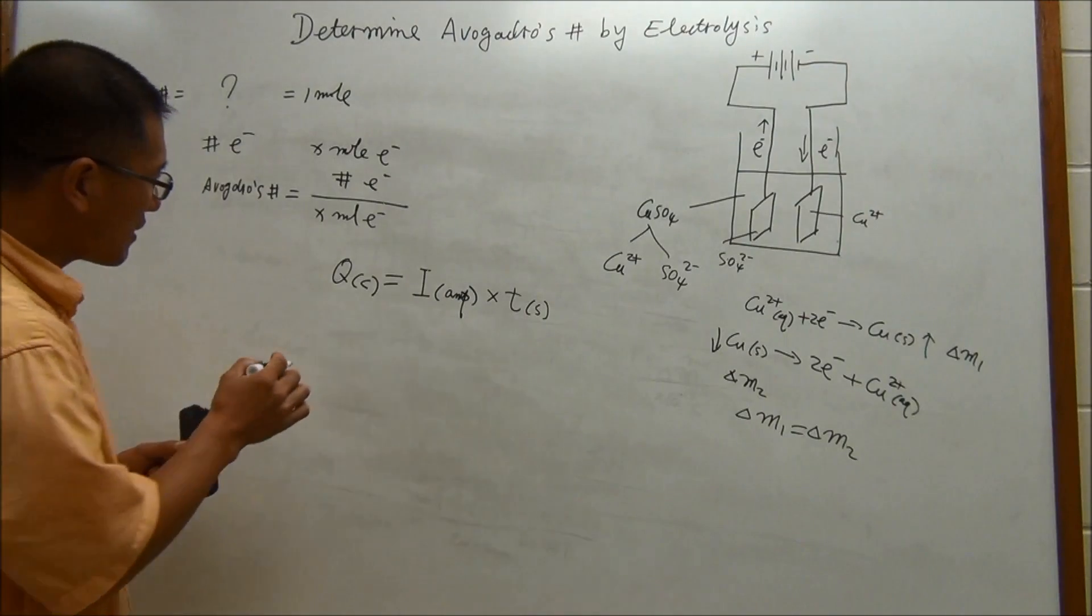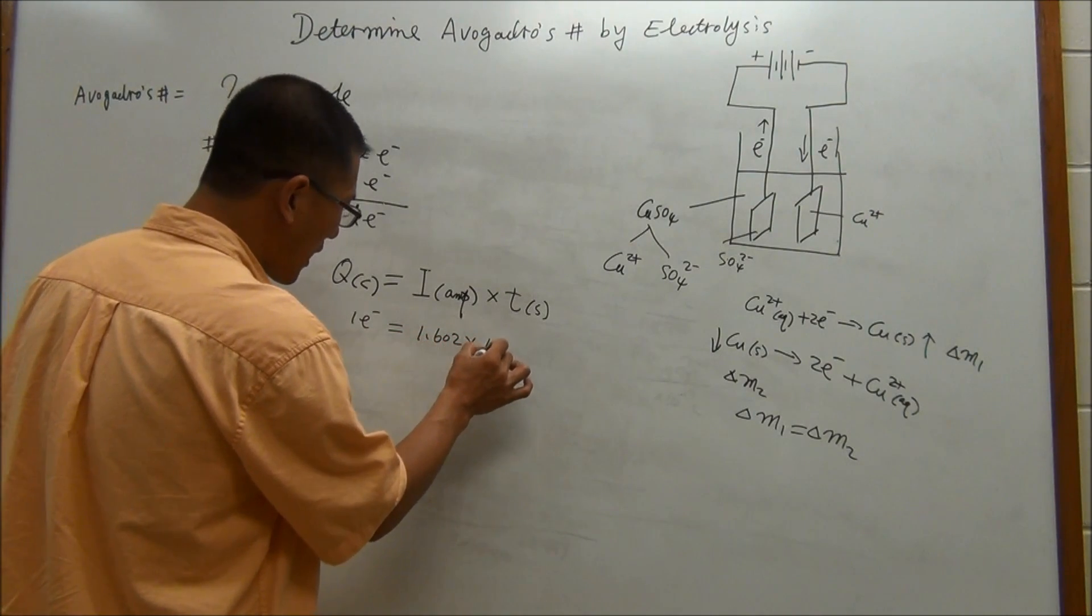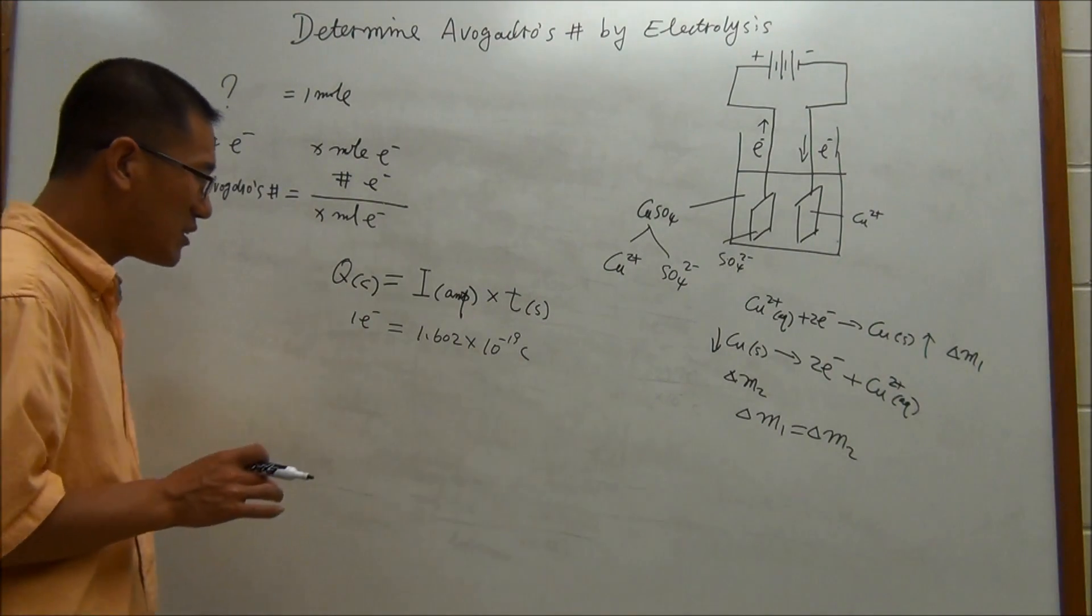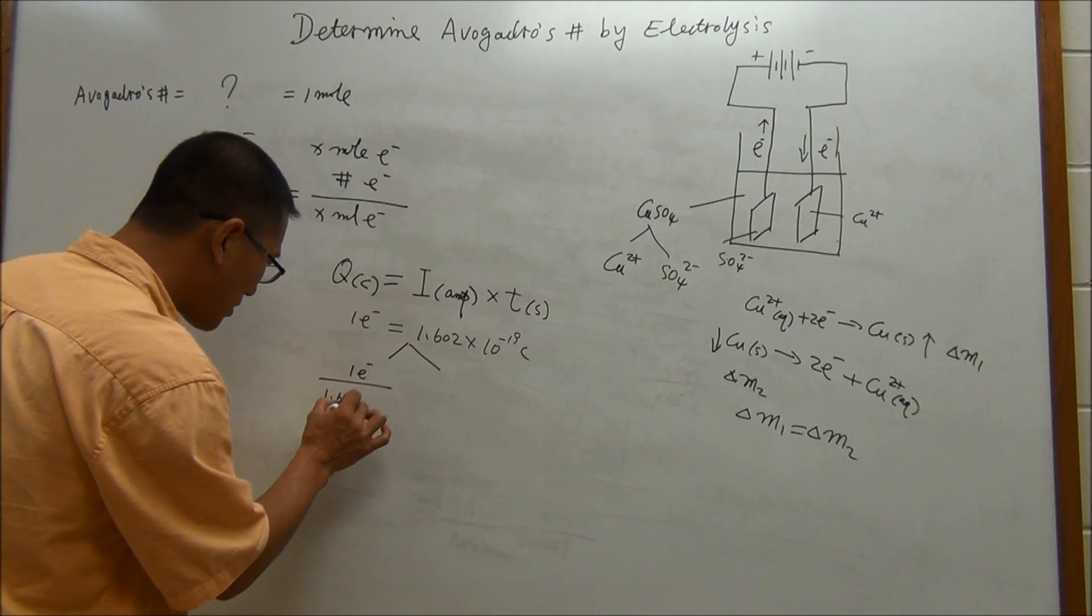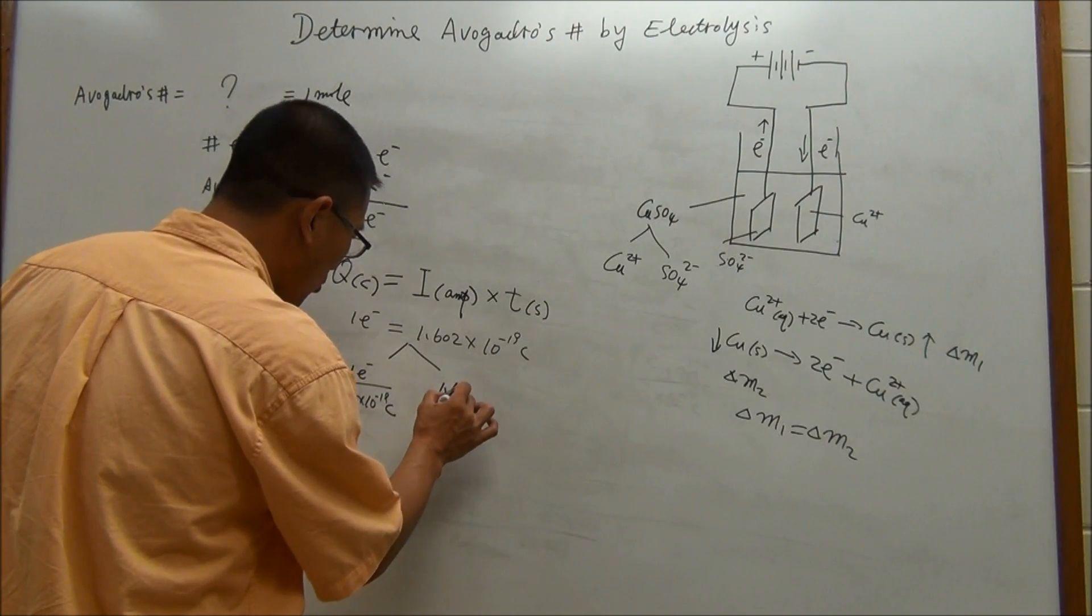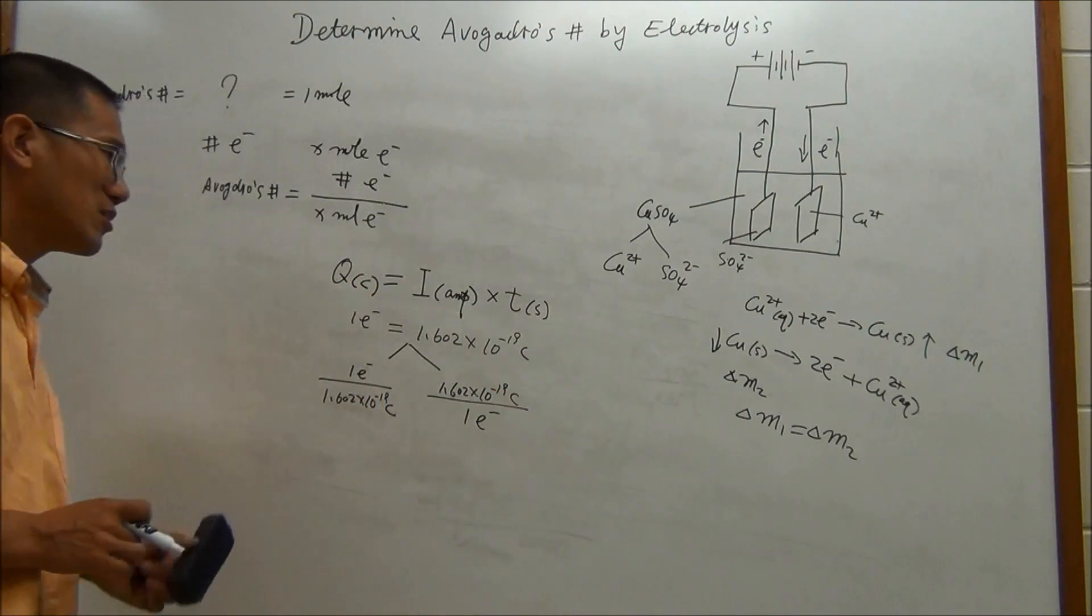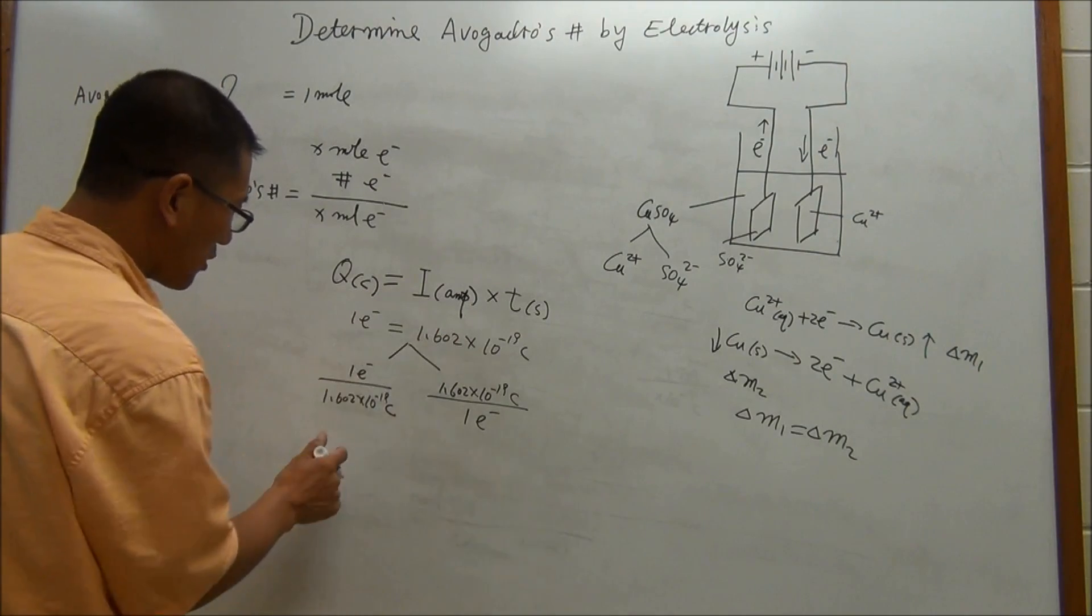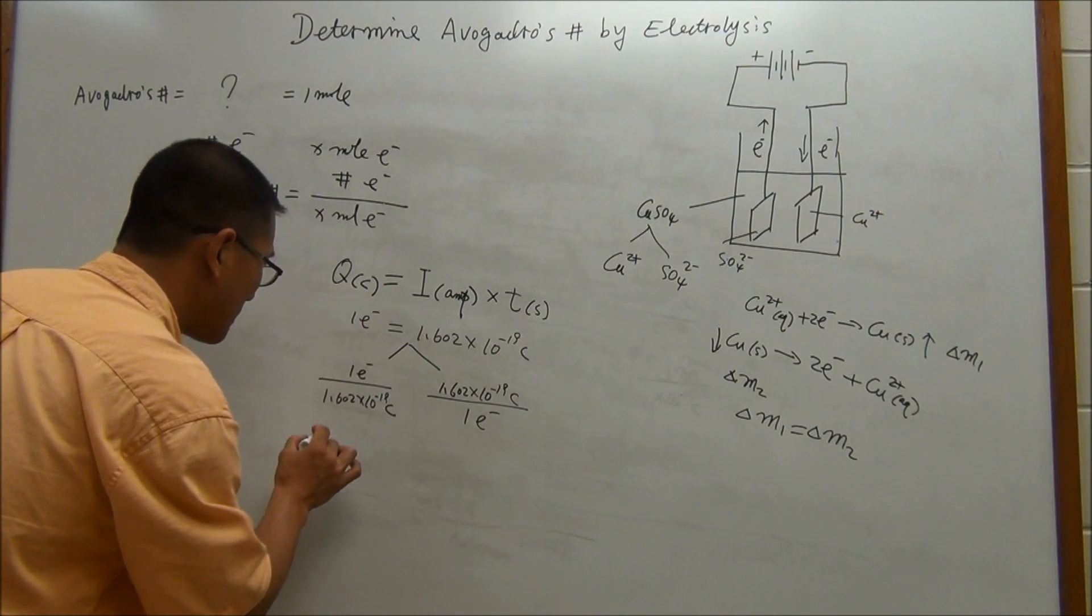In chapter 2, we learned that for a single electron, the charge is 1.602 times 10 to the negative 19 coulomb. Whenever you see an equal relationship, you immediately get two conversion factors. One is one electron on top and 1.602 times 10 to the negative 19 coulomb on the bottom. The other one is 1.602 times 10 to the negative 19 coulomb divided by a single electron. Because we are looking for the number of electrons, we have to pick which one? You will get the answer like this.